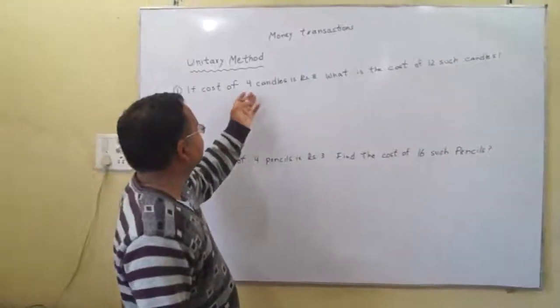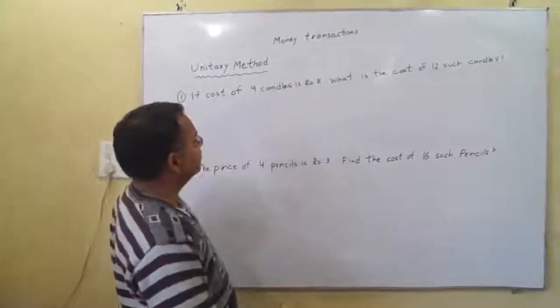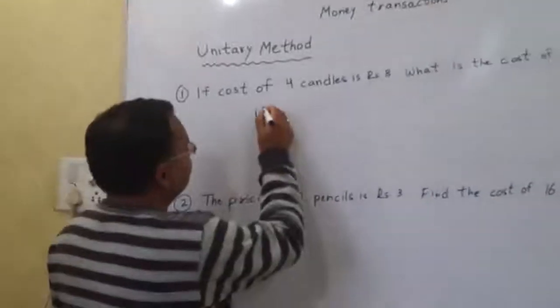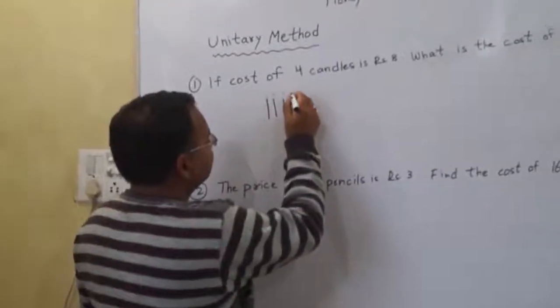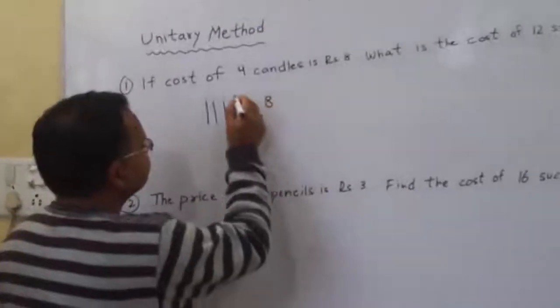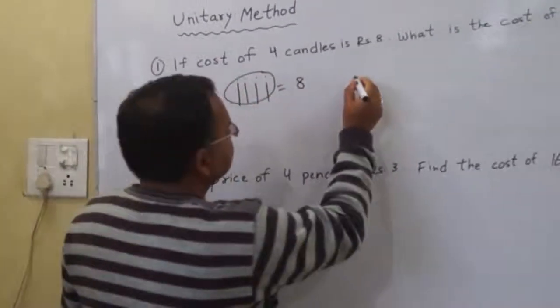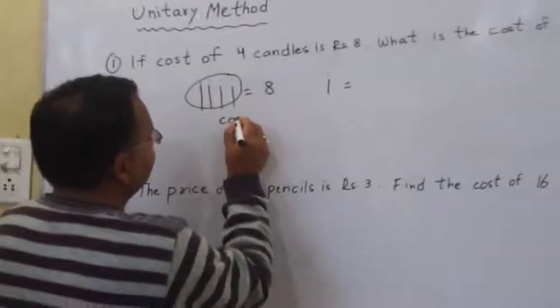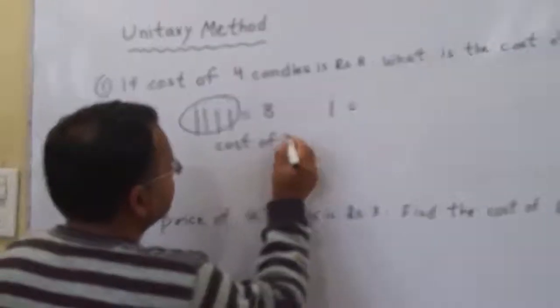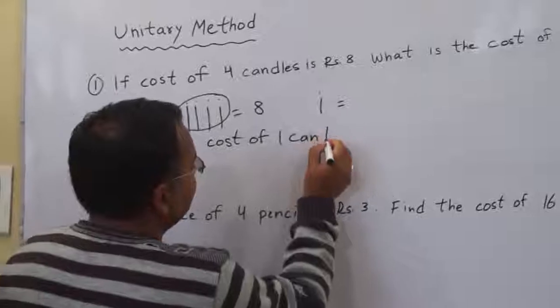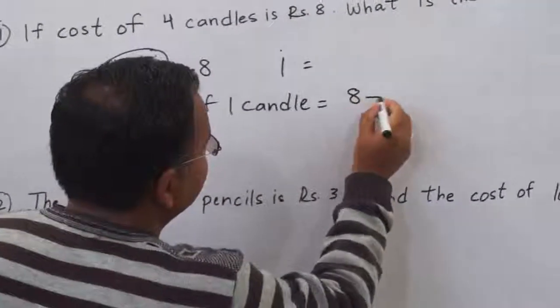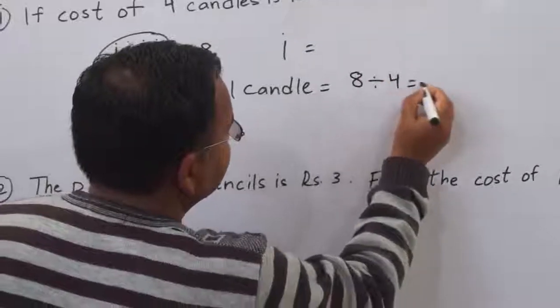We have the cost of 4 candles is rupees 8. Suppose this is a candle. The cost of 4 candles is rupees 8. And the cost of 1 candle is 8 divided by 4, that is 2 rupees.